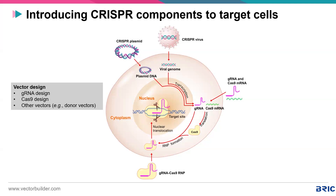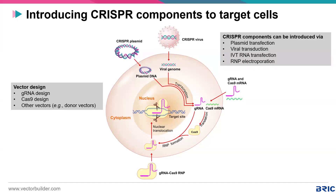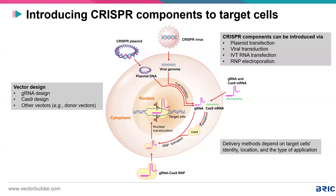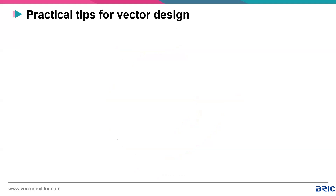CRISPR components can be introduced into the cell through many different ways: plasmid transfection, viral transduction, IVT RNA transfection, or RNA electroporation — each of which we will go through in detail. Both vector design and the delivery method you choose heavily depend on your target cell type, its identity, where it is located, and what your experimental goals are. Let's shift focus to vector design specifically and discuss practical tips for a successful CRISPR experiment.